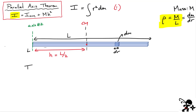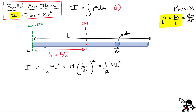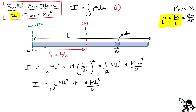Let's apply this equation. The moment of inertia through the center of mass is one-twelfth ML squared, plus M times (L/2) squared. That's one-twelfth ML squared plus M times L squared over 4, which is 3 twelfths ML squared. Adding one-twelfth plus three-twelfths gives four-twelfths, which equals one-third ML squared — the exact same result as when I set up the integral directly with the appropriate limits.